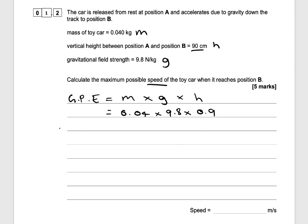So GPE = 0.04 × 9.8 × 0.9, which gives us 0.3528 joules. That's the energy. Now we need to use the kinetic energy equation to work out the maximum possible speed.